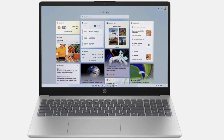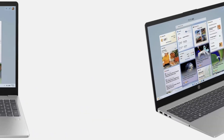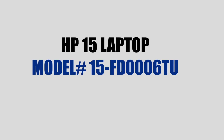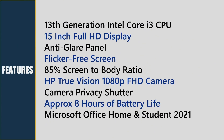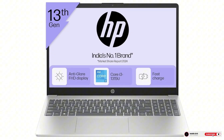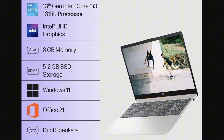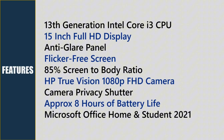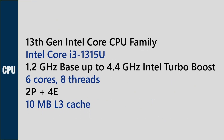Welcome back. In this video we see the specs and features of the HP 15 15-inch laptop. The model number is 15-FD0006TU. This laptop comes with a 13th generation Intel Core i3 CPU, 15-inch Full HD anti-glare display, 85% screen-to-body ratio, HP TrueVision 1080p Full HD camera with privacy shutter, approximately eight hours of battery life, and Microsoft Office Home and Student 2021 included at no extra cost.